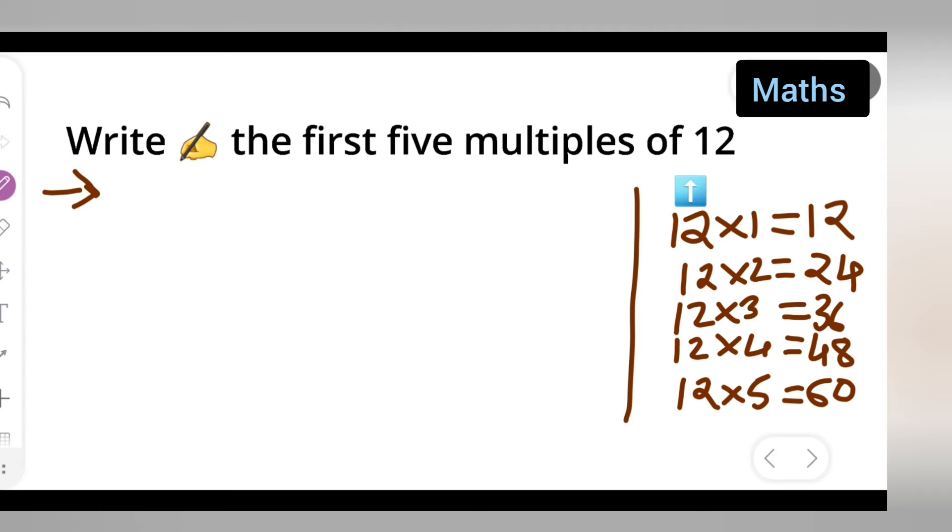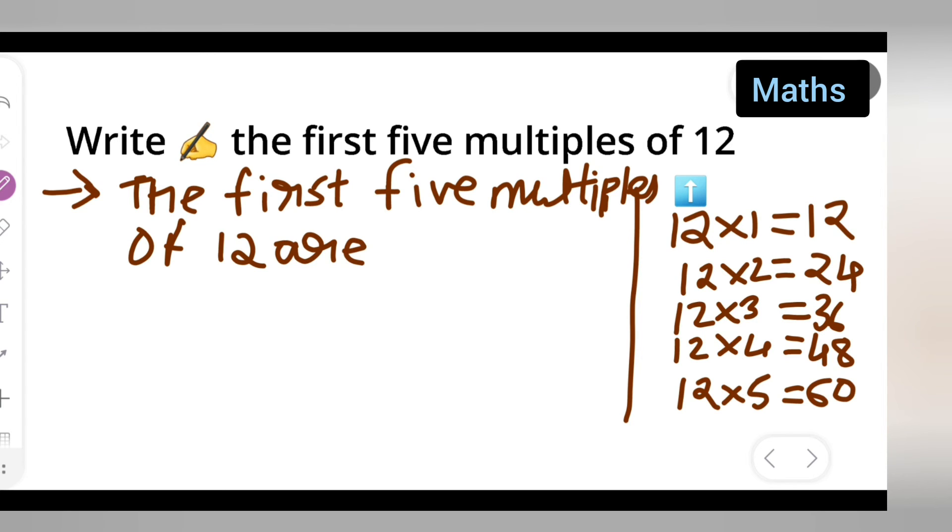So the first five multiples of 12 are: 12, 24, 36... you can write 36 here, then 48 and 60.